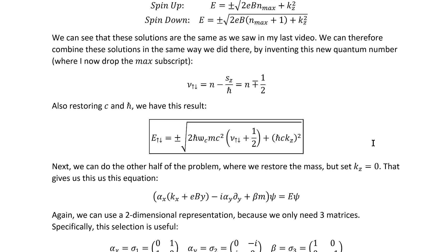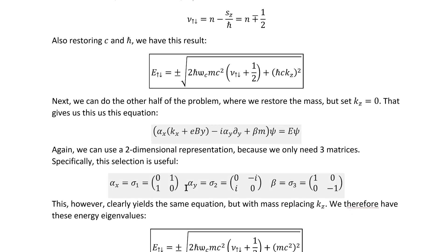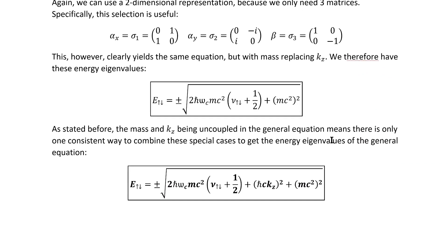Next, we can do the other half of the problem where we restore the mass but set kz equal to zero. That gives us this equation. We see that this equation is exactly the same, at least if we pick this perfectly valid representation for the needed matrices, as the equation that we solved to get these except where the m parameter is replacing the kz parameter which means we simply immediately see that we have this solution. Now, as stated above, the mass and kz being uncoupled in the general equation means that there's only one consistent way to combine these special cases to get the energy eigenvalues of the general equation. And here we have that result. It is exactly the same as the general result that we got in my ladder operator video.